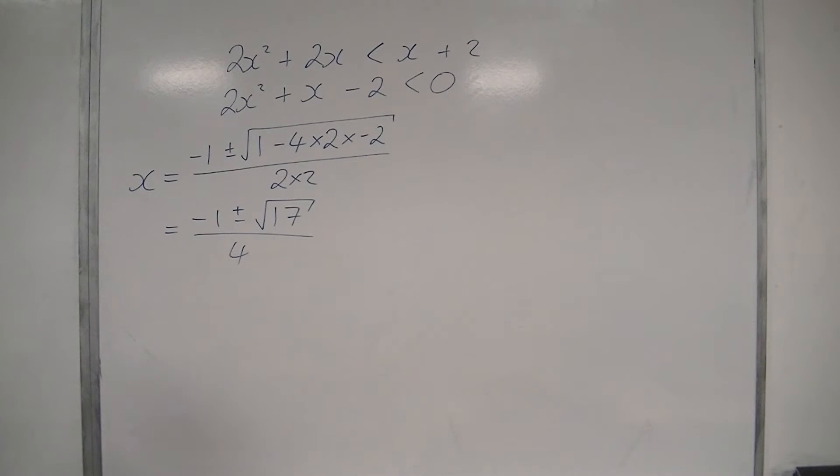These are the solutions: (-1 + √17)/4 and (-1 - √17)/4.